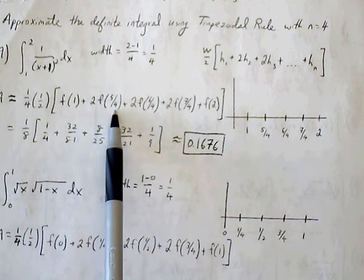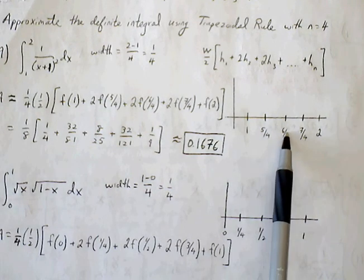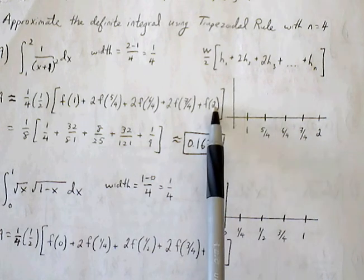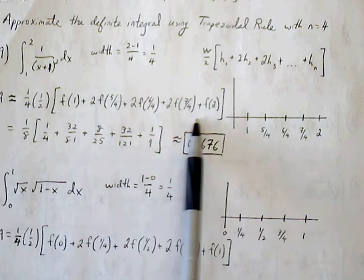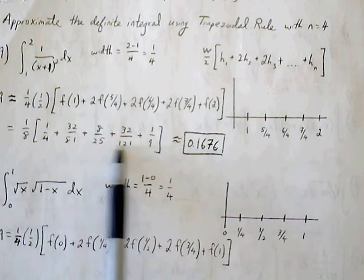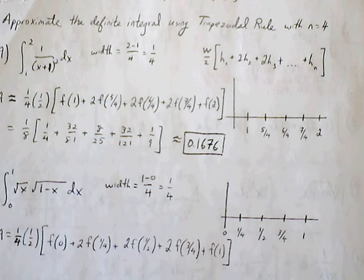f of 6 fourths, we're going to be doubling this as well. It's the height that's in the middle, f of 7 fourths, and finally f of 2. All this you can plug in your calculator, and you're going to get values that you can just combine and multiply through with 1 eighth, and you're going to get 0.1676.